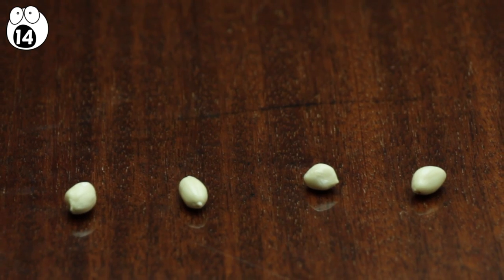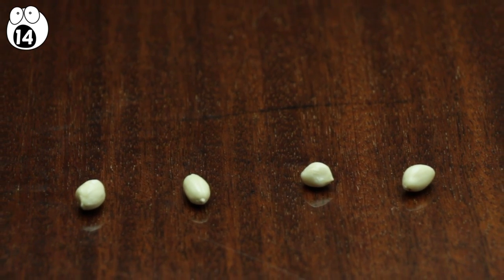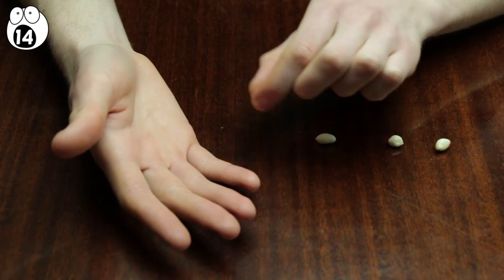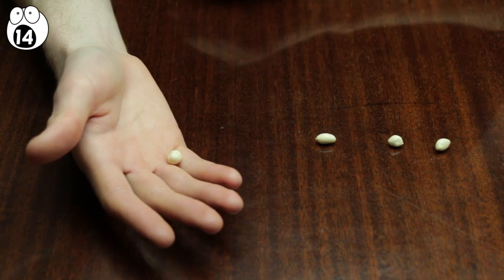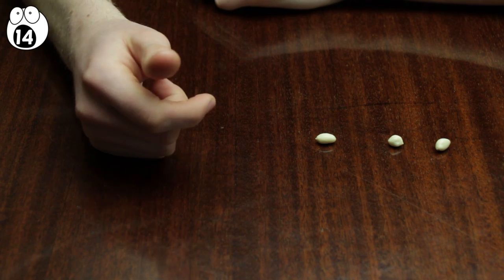The trick is simple. You have a secret fourth nut, or whatever you want to use. A gummy bear works well too. Hide the fourth nut in your hand with a finger palm. Basically, just naturally hold it in your last two fingers.